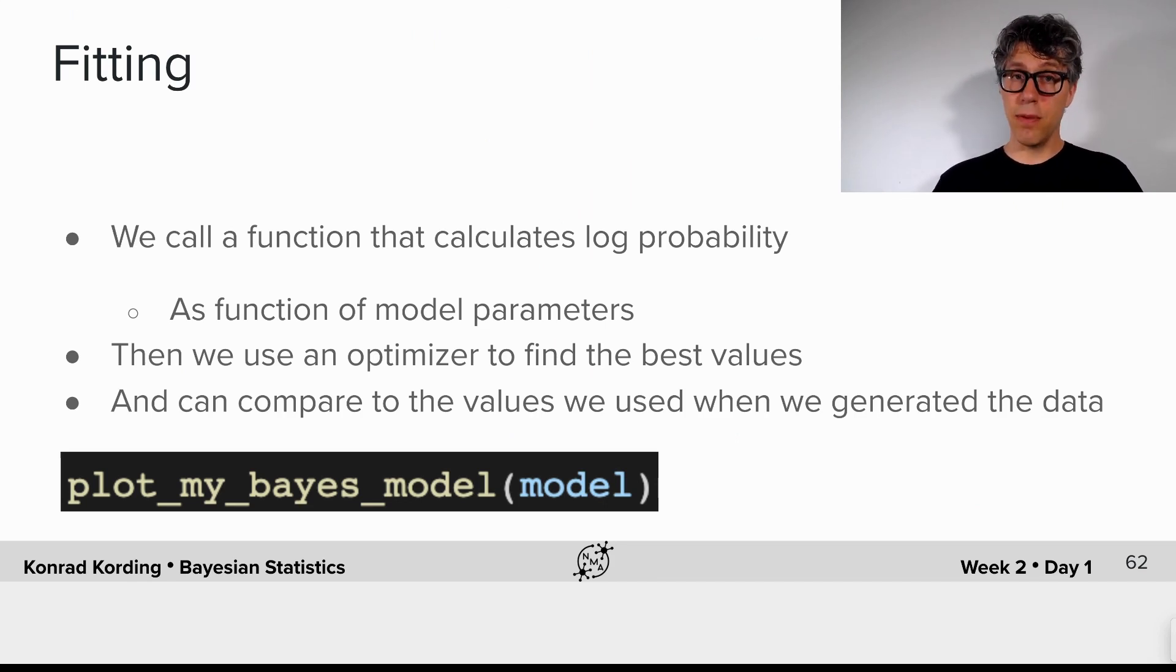Now, in our case, we only want to look at a single parameter, which is the probability that there's a common cause. So instead of going the fitting route, we already provide you with code that will basically try all meaningful parameters for this constant of how important the common versus the independent mode is in the mixture of Gaussians models. So now you can use the plot_my_bayes_model function that already does all that to loop through all meaningful parameters to see if we will recover the right one.